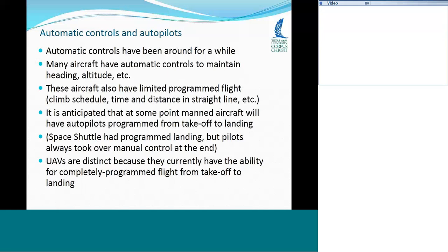Some unmanned aircraft can fly a certain distance in a straight line — basically the Model 147A, one of the first reconnaissance drones, could do that. It's expected that at some point, manned aircraft will have autopilots programmed from takeoff to landing — the no-pilot-on-board concept. If you look at the statistics of aircraft accidents, particularly general aviation small airplanes, the vast majority involve pilot error — it's a failure of the pilot, not the aircraft system.